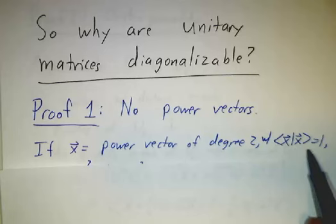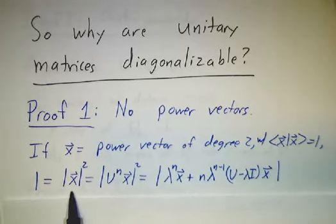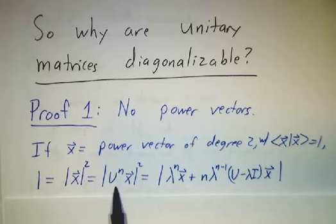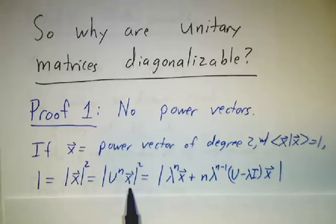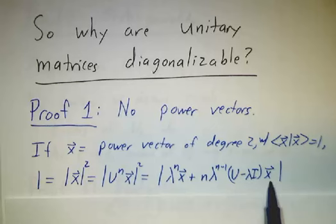And you'd be able to find a power vector of degree 2. And you can scale it so that its length is 1. And then 1 would be the length of x squared. So that would be the length of U to the nx squared. But if x is a power vector, then we can expand U to the nx as lambda to the nx plus n lambda to the n minus 1 times U minus lambda times the identity x. And since it's not an eigenvector, this term is not 0.